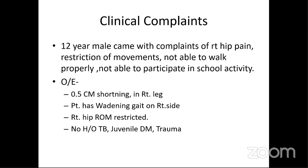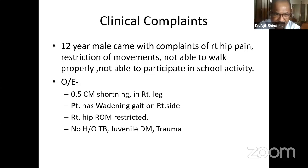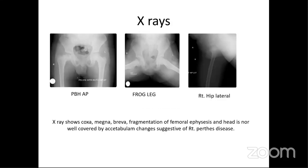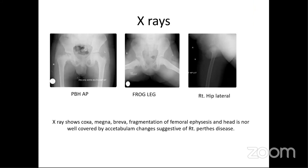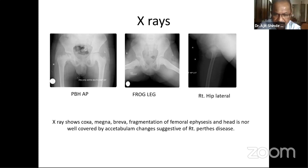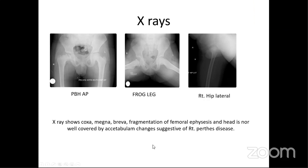A 12-year-old male came with complaints of right hip pain, restriction of movements, inability to walk properly, inability to participate in school activities, and shortening. He had a Trendelenburg gait and restricted hip range of movement with no history of tuberculosis. The X-rays show coxa magna, coxa breva, fragmentation of the femoral epiphysis, and poor head coverage — advanced Perthes changes.